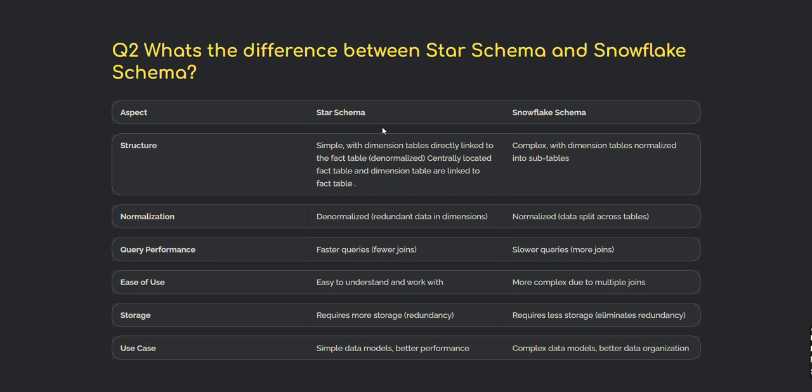Query performance in star schema is faster because there are fewer joins and fewer tables. Snowflake schema query performance is slower due to more joins and more sub-tables. Ease of use: star schema is easy to understand and work with; snowflake is more complex. Storage-wise, star schema requires more storage due to redundancy; snowflake requires less storage because tables are normalized.